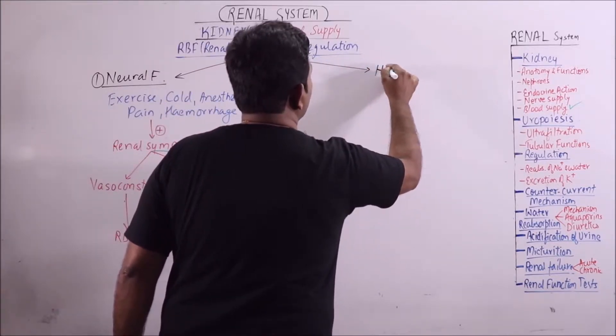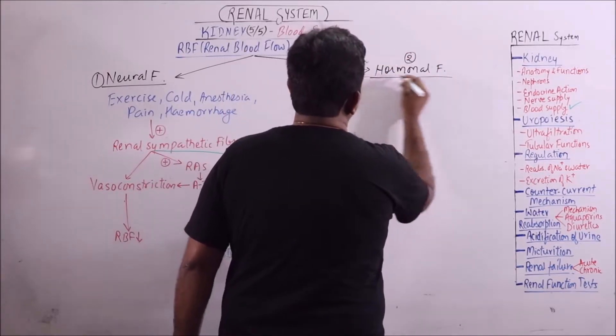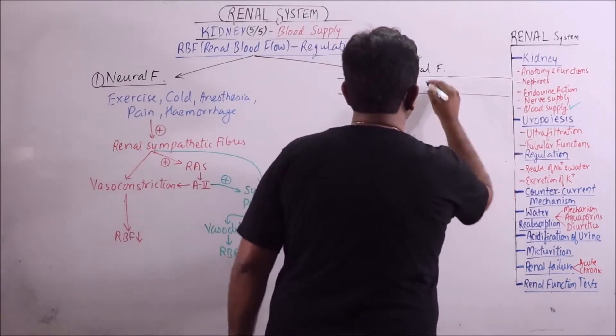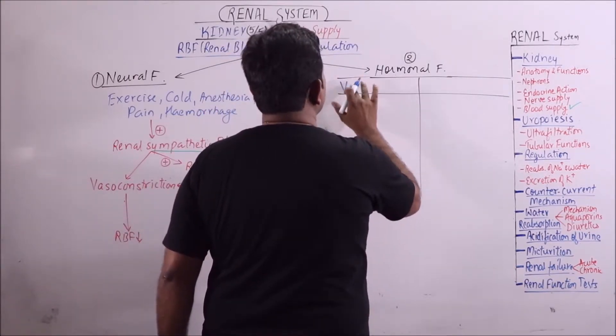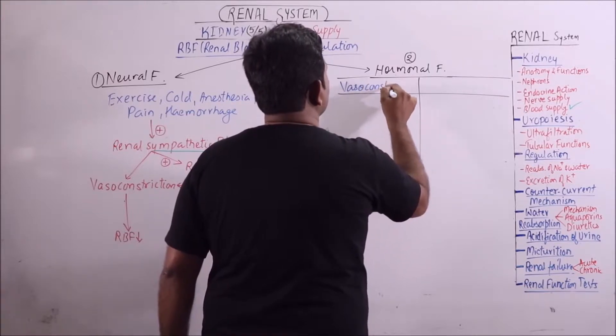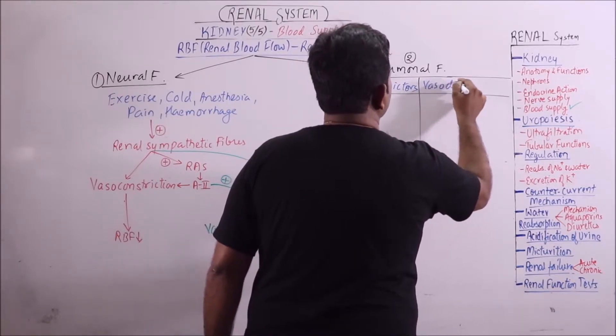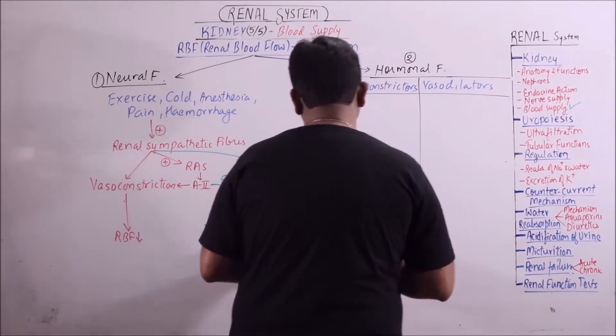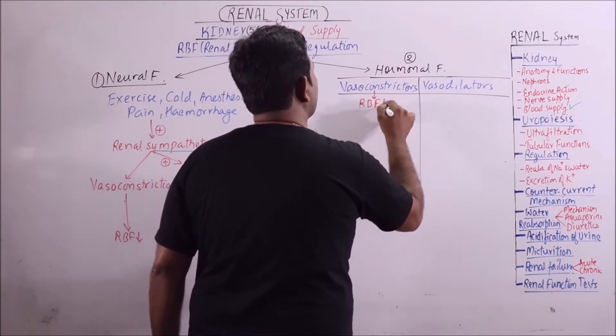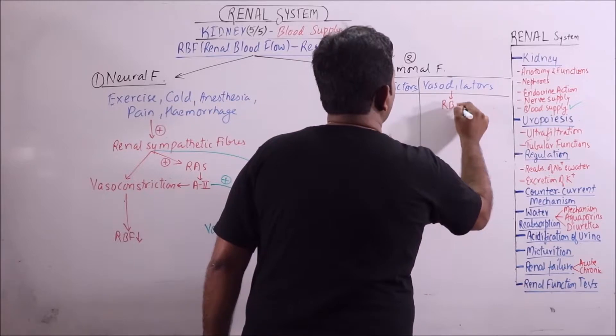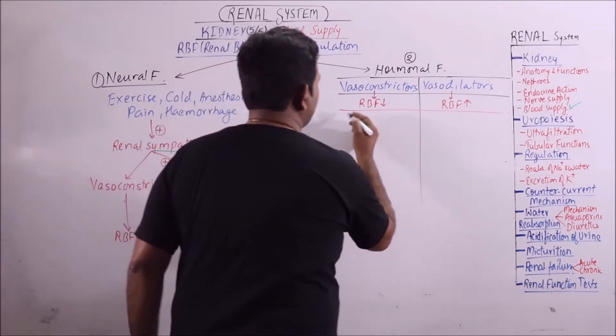Now second is hormonal factors. We will divide the hormonal factors into 2 categories: those causing vasoconstriction and those causing vasodilation. So here vasoconstrictors and vasodilators. We should know that vasoconstrictor will decrease the RBF and vasodilator will increase the RBF. Now here is the list of vasoconstrictors.